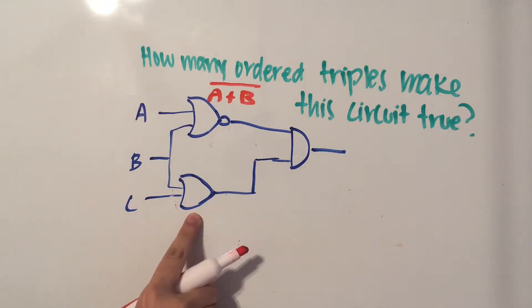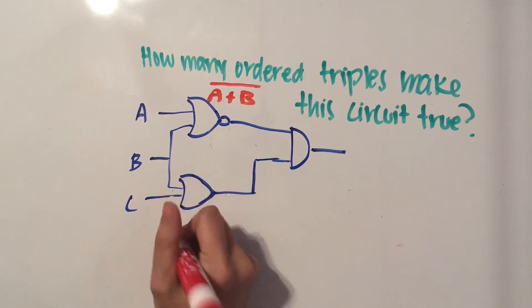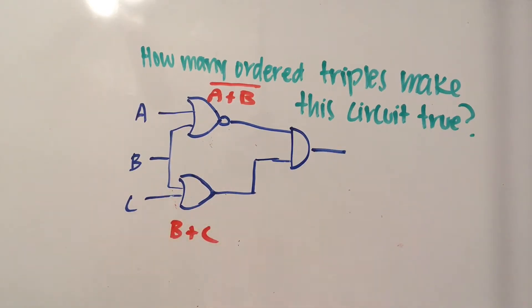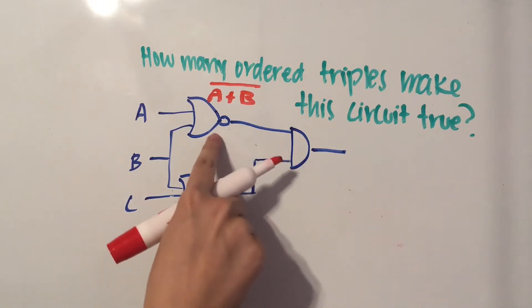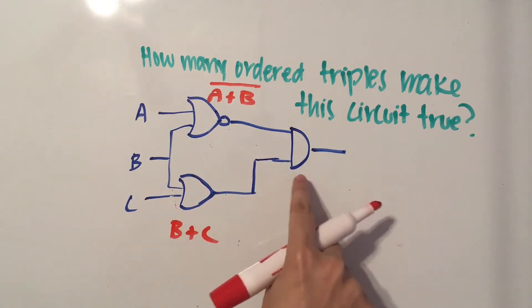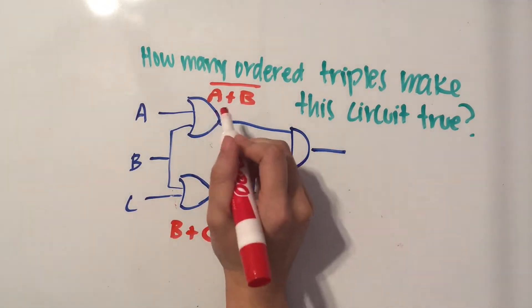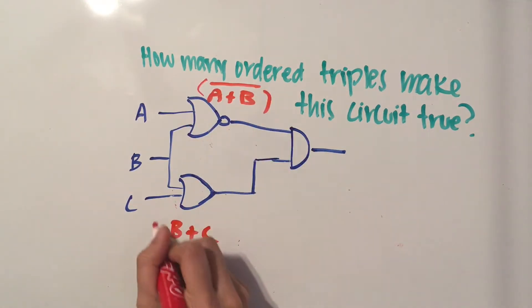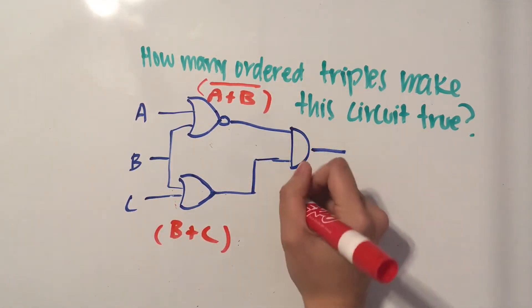And then here we have B and C, and it's an OR gate, so we're going to write B or C. And then here, as you can see, these are connected to the same AND gate. So we're going to take this whole thing and this whole thing and multiply them together.